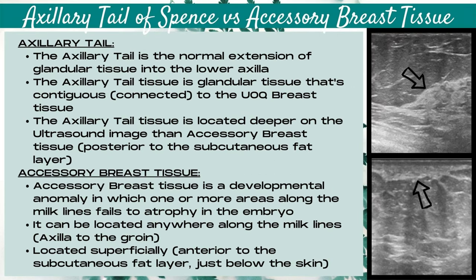Let's talk about the differences between the axillary tail of Spence and accessory breast tissue. The axillary tail of Spence is the normal extension of glandular tissue into the lower axilla, and this glandular tissue is contiguous or connected to the upper outer quadrant breast tissue. The axillary tail tissue is located deeper on the ultrasound image than accessory breast tissue — it's below the subcutaneous fat layer.